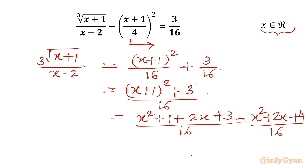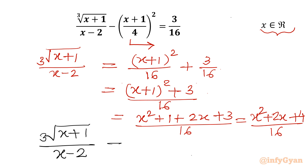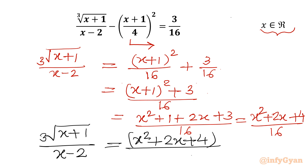So the LHS is cube root of (x + 1)/(x - 2) and the RHS is (x² + 2x + 4)/16. Note the denominator cannot be 0, so x cannot equal 2. Now I will cross multiply: (x - 2)(x² + 2x + 4) = 16 · cube root(x + 1).